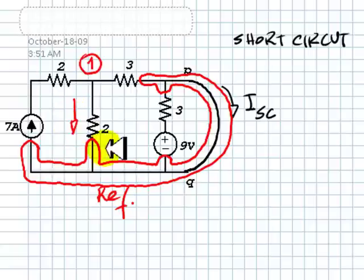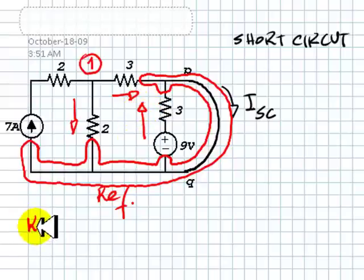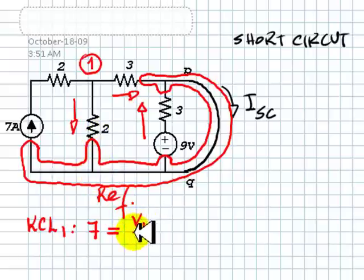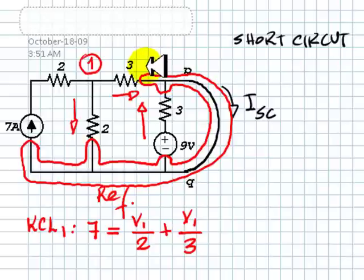Current 7 amps. Current 1 arbitrarily chosen. Current. Current here. And why not? Current here, like so. Okay, KCL for node number 1. This one is 7 amps. Current is going in. 7 amps equals to V1 minus the voltage of the reference 0 over 2 plus V1 minus the voltage of the reference because this node is the reference. Zero volts divided by this 3 ohm resistor.